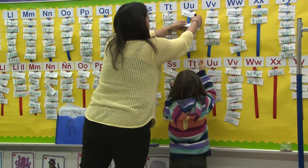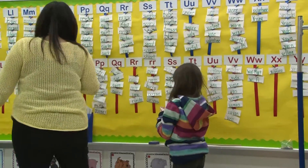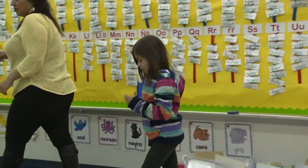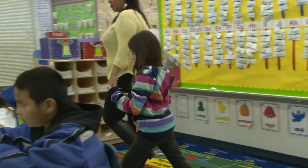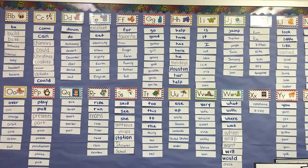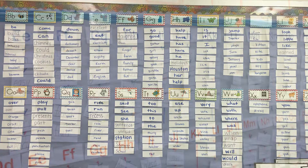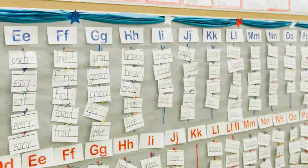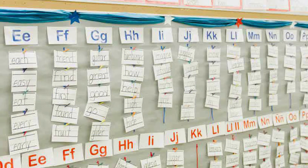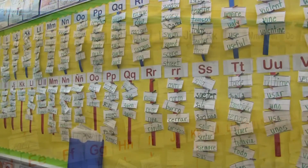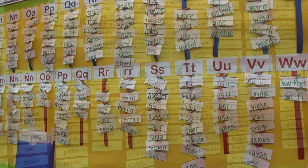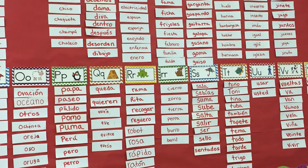Word walls should be interactive and set up in a way that gives students the opportunity to remove a word if needed. Once words are learned, creating a way to bank learned words will allow space for new words to be added. Vocabulary from word walls, student-generated alphabets, and labels should be reviewed in the language of the day.